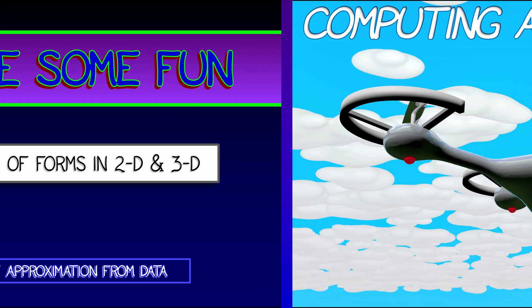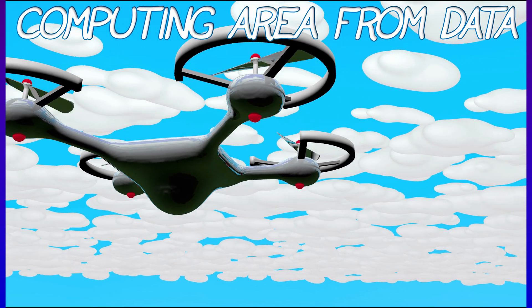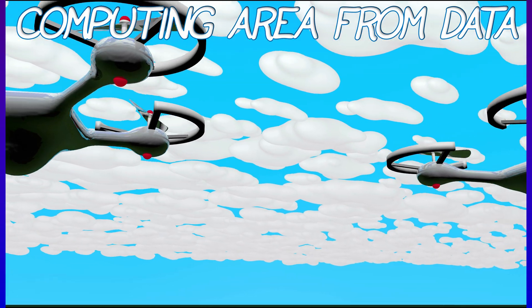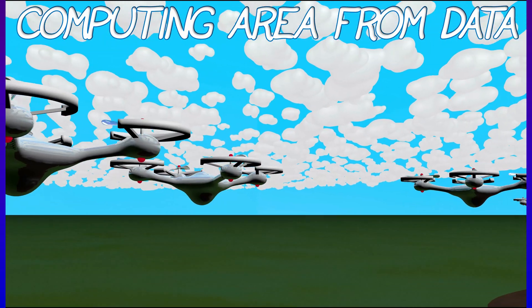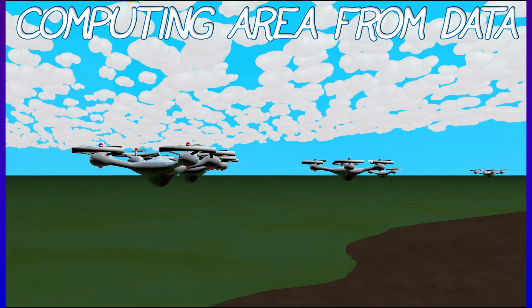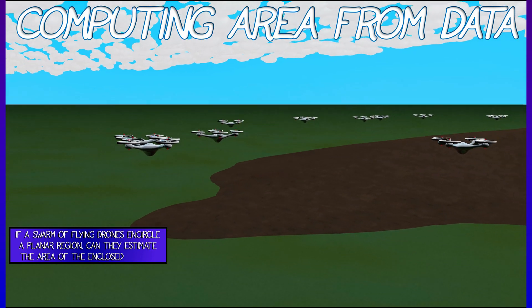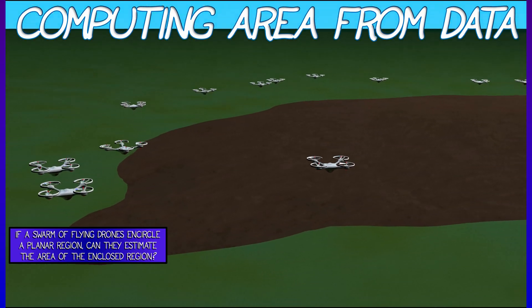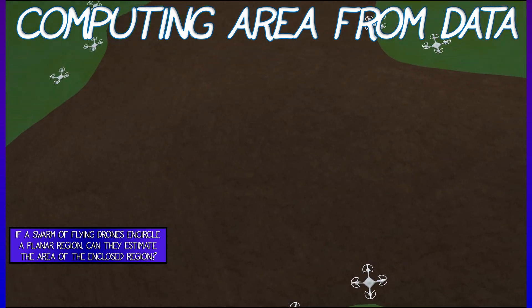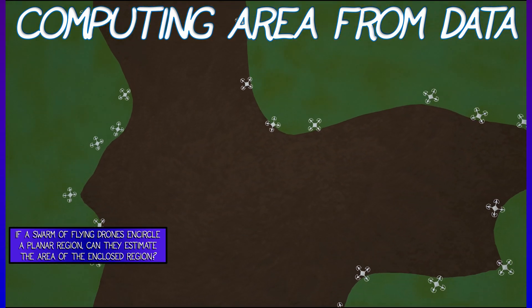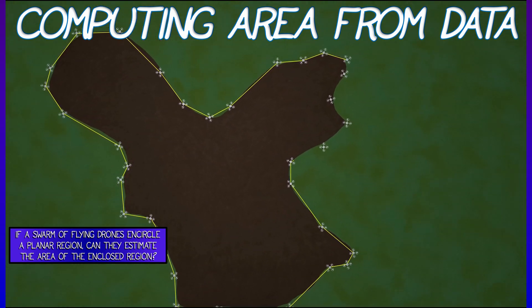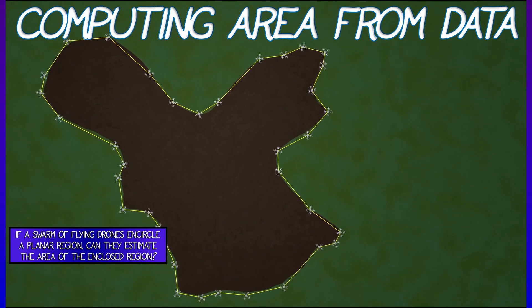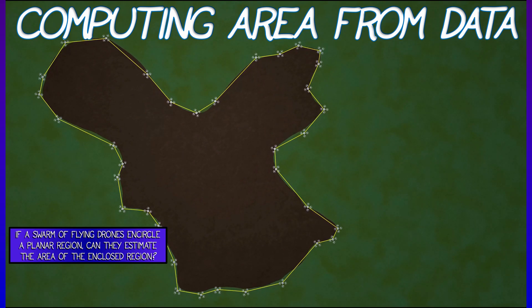Our first example is a little bit fanciful. Let's say you have a swarm of drones that go all over the place, and they use their cameras to find the boundary between two regions — say land and sea, forest and desert, or the boundary of a forest fire. They set up a local communications network and collectively try to estimate the area of the region bounded by those drones.